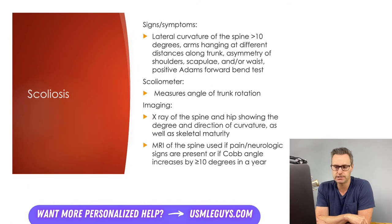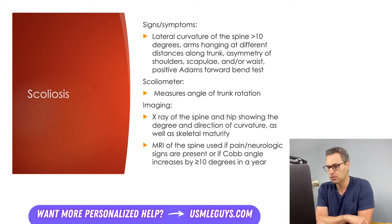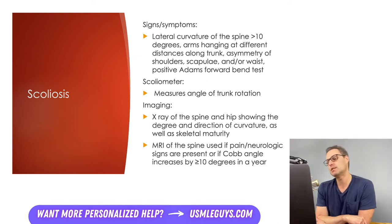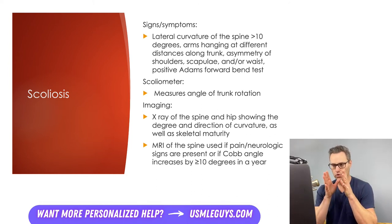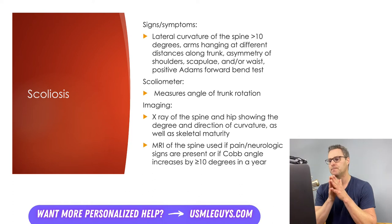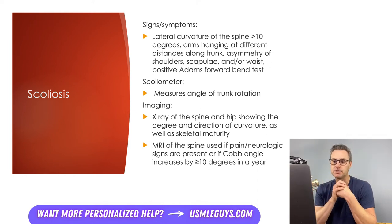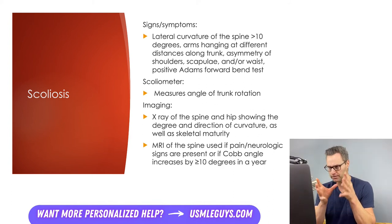Next up is scoliosis — a lateral curvature of the spine greater than 10 degrees. This is much more common in females versus males. It may be noticeable that the arms hang at different lengths due to the spine's curvature, and the patient may also have asymmetry of the shoulders, scapula, and/or waist. A commonly employed test is the Adams forward bend test, where you observe the patient from behind with feet together, knees forward, bending at the waist until the spine is parallel to the horizontal plane. Any rib prominence visible on one side and not the other is a positive test. You then assess using a non-invasive scoliometer — a device adapted from a carpenter's level for measuring rotational prominence.